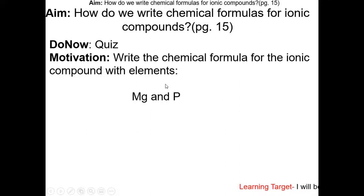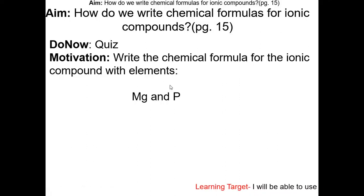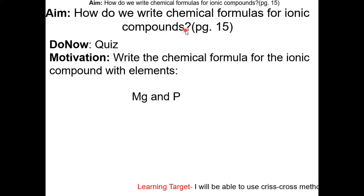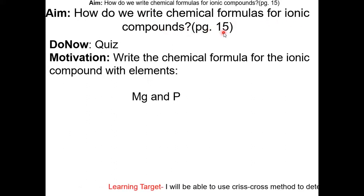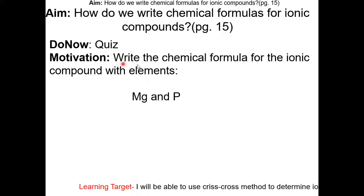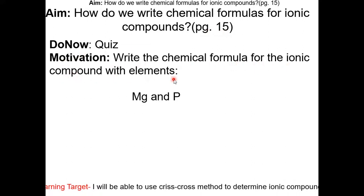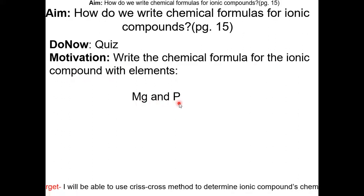This is my fifth video lesson for the ionic bond unit. In this lesson, we'll be learning how to write chemical formulas for ionic compounds. So let's go to page 15 in the class packet. Motivation: write the chemical formula for an ionic compound with elements magnesium and phosphorous.